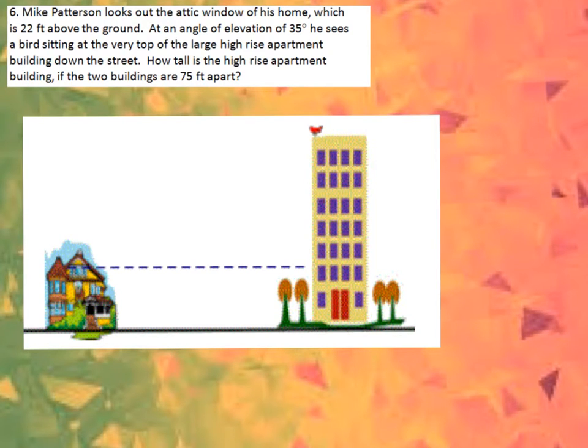I just want to help you a little bit with this diagram and key in on a couple important ideas. The first idea is that the person is in the attic when they're viewing the bird up at the top.